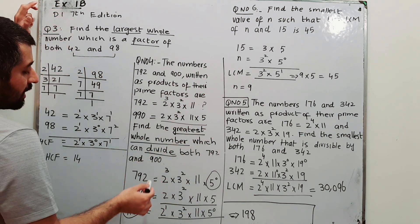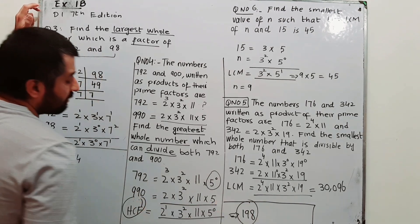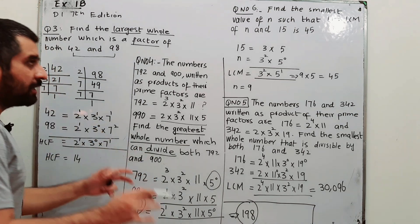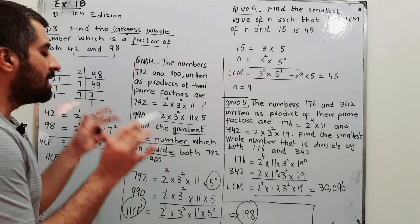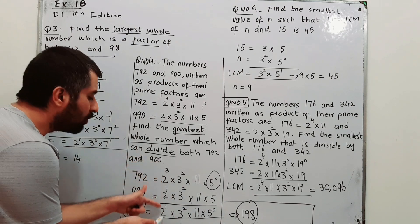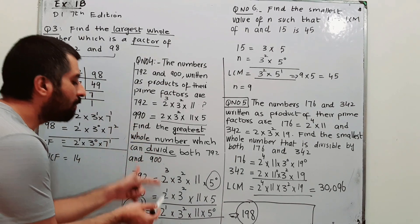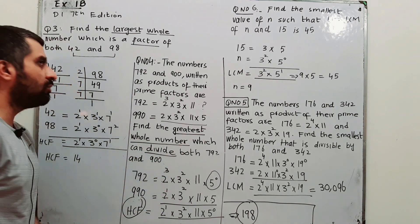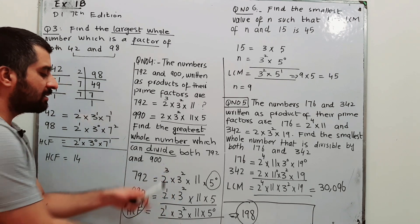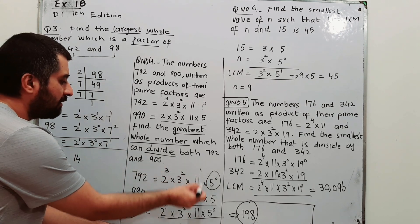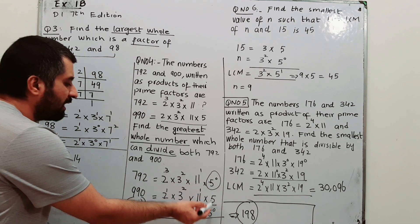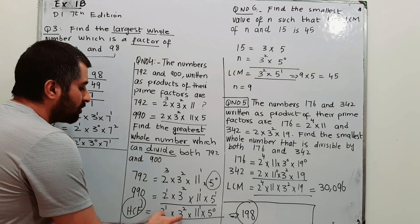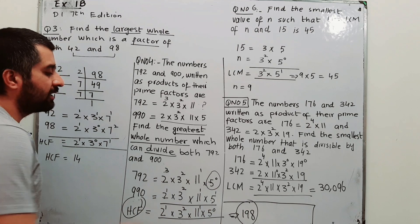For HCF, take the lower power from each column. Column of 2: 2³ vs 2¹ — take 2¹. Column of 3: 3² vs 3² — same powers, take 3². Column of 11: 11¹ vs 11¹ — take 11¹. Column of 5: 5⁰ vs 5¹ — take 5⁰. Multiply them: 2 × 3² × 11 × 5⁰ = 198.